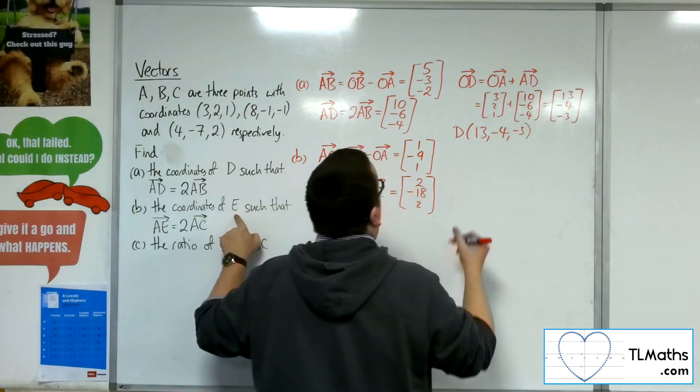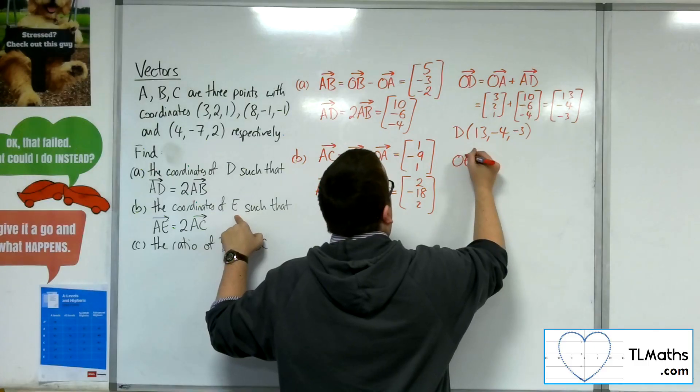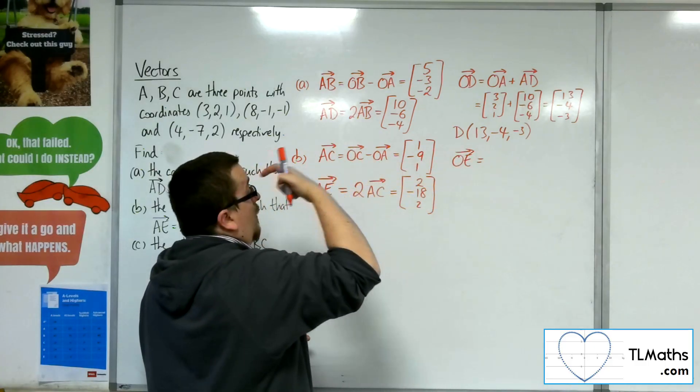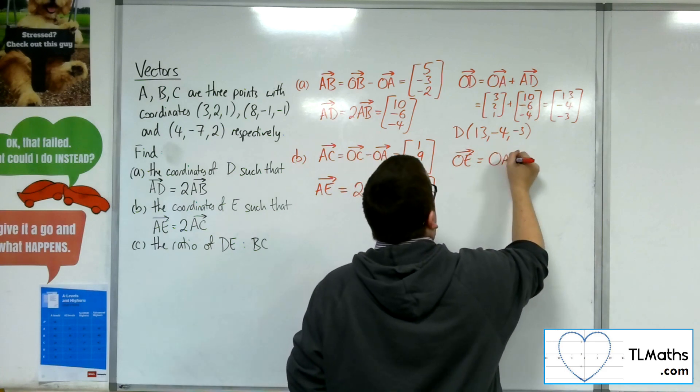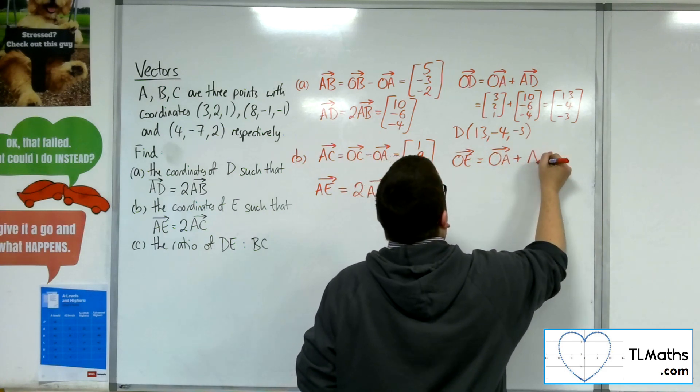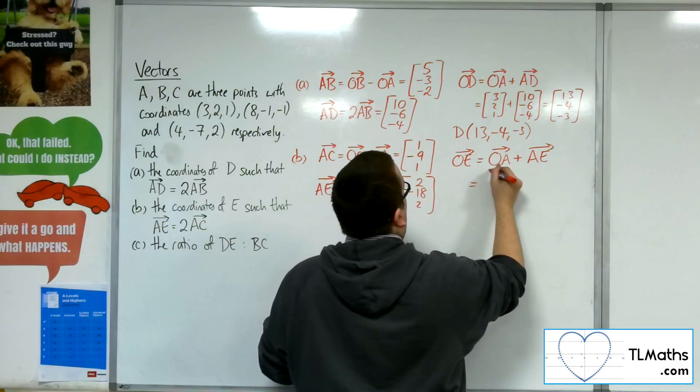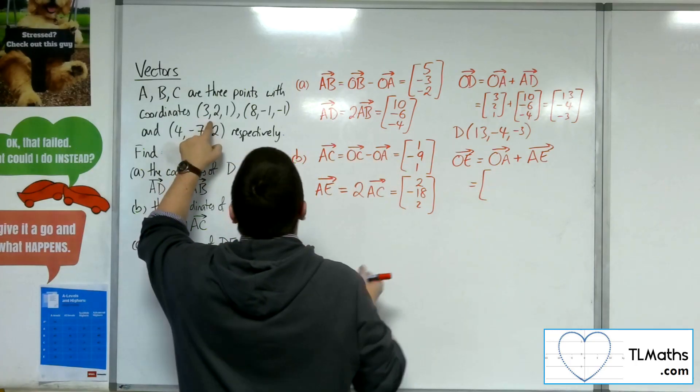So the coordinates of E, so I could find the position vector of E. So that would be OA plus AE. So the position vector of A is 3, 2, 1.